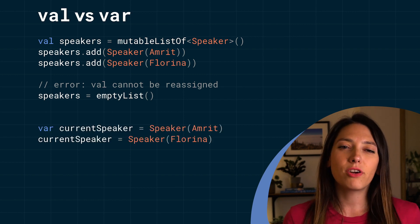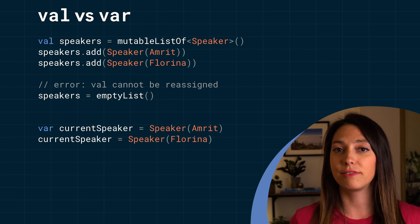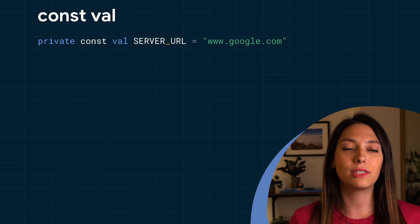Vars are variables that can be assigned multiple times. For example, the current speaker is once set to Amrit, then set to Florina. But prefer vals whenever possible — like this, you're keeping your references immutable, making it easier to reason about and less likely to create bugs. In some cases you might know the value of a property at compile time. To mark it as a compile time constant, use the const modifier.